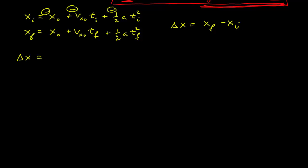So I'm going to take the difference between these two. Delta x is x_final minus x_initial. The x₀ terms cancel. I get the velocity at t equals zero times t_final, minus the velocity at t equals zero times t_initial — which is different from my initial velocity, possibly — plus one half a·t_f squared, minus one half a·t_i squared.